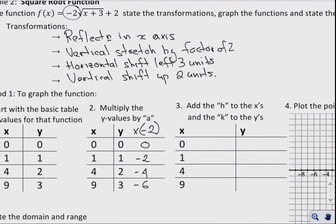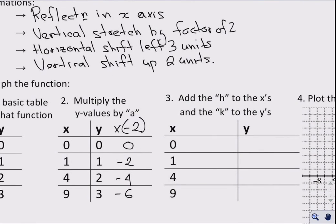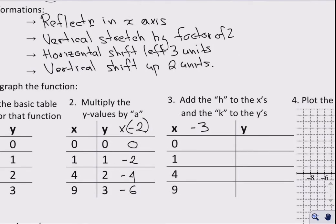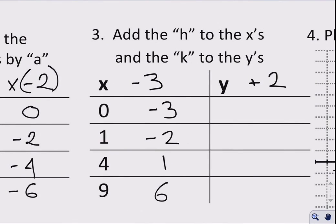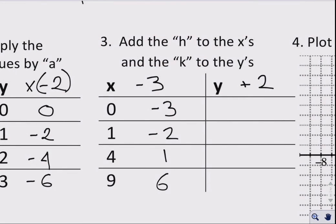And now we do the horizontal and vertical shifts. So here for the x's, we are going to subtract 3, and for the y's, we are going to add 2. So 0 becomes negative 3, 1 becomes negative 2, 4 becomes 1, and 9 becomes 6. The y values, remember, you're taking the y value from the previous step and adding 2. So 2 plus 0 is 2, 0, negative 2, negative 4.